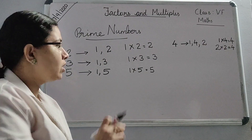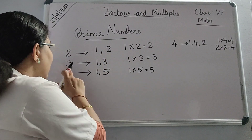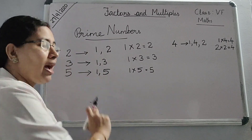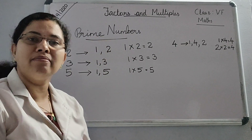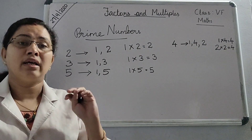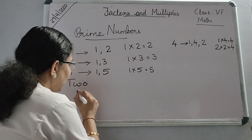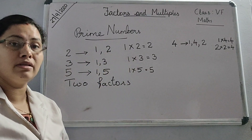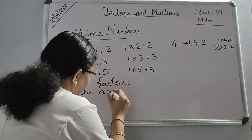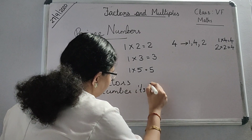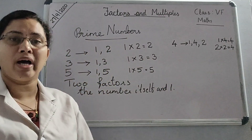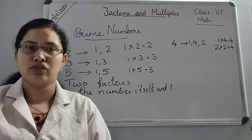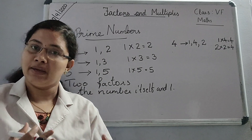That means, if we take 2, then 2 is a factor and the other factor is 1. If you take 3, then 3 is a factor and the other factor is 1. If you take 5, then 5 is a factor and the other factor is 1. Such numbers are known as prime numbers. Prime numbers have only 2 factors: the number itself and 1. For example, if you take 11, only 1 and 11 are the factors of 11, so 11 is a prime number.